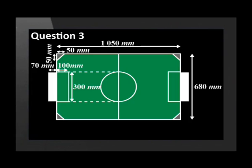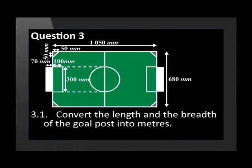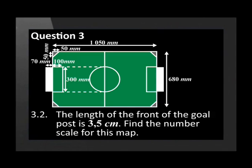Here is the layout of a school soccer field. Convert the length and the breadth of the goalpost into meters. The length of the front of the goalpost is 3.5 cm. Find the number scale for this map.